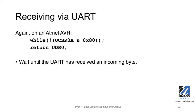For receiving, it's very similar. You will be checking another register — the receiving status register — checking a different bit. This checks whether a new byte has been assembled and new data is ready to be read into the microcontroller. If that's the case, the loop will break out and will return the value from the received register.